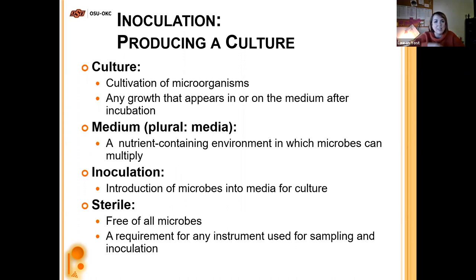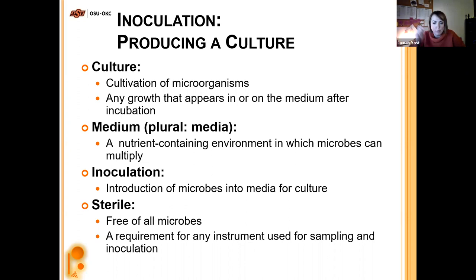Inoculation involves producing a culture. You have a sterile media of some kind — a sterile broth made sterile by autoclaving, which uses heat, pressure, and moisture to kill everything in there. They use autoclaves a lot in hospitals and microbiology labs. You take a sterile media and then you inoculate it — introducing microorganisms to that sterile media so we can grow them.